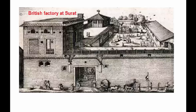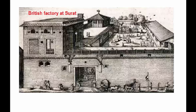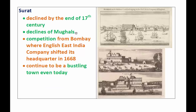This is what the port of Surat looked like, and this was the first British factory there. Surat declined by the end of the 17th century. As the Mughals declined, Surat came under the control of other parties. Another reason was competition from Bombay, where the English East India Company shifted its headquarters in 1668.